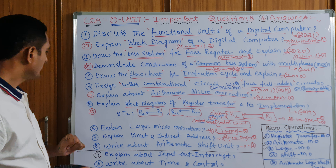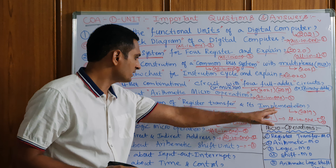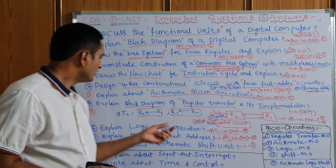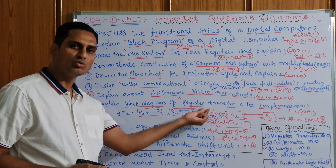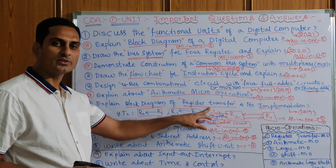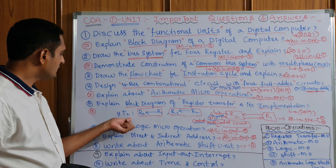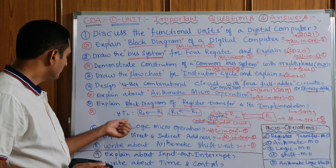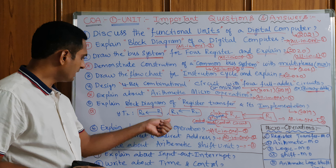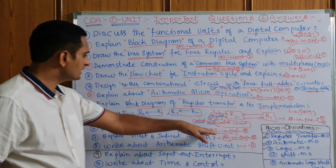Fifth question: explain block diagram of register transfer and its implementation. Sometimes some words will be added — you have to catch the keyword first. Read the question two or three times and you will find a word you know. Explain block diagram of register transfer — transferring from one register to another register, that is micro operation. Something extra may be added in the question paper, like: why T2 tends to R1, and R1 transfers to R2.